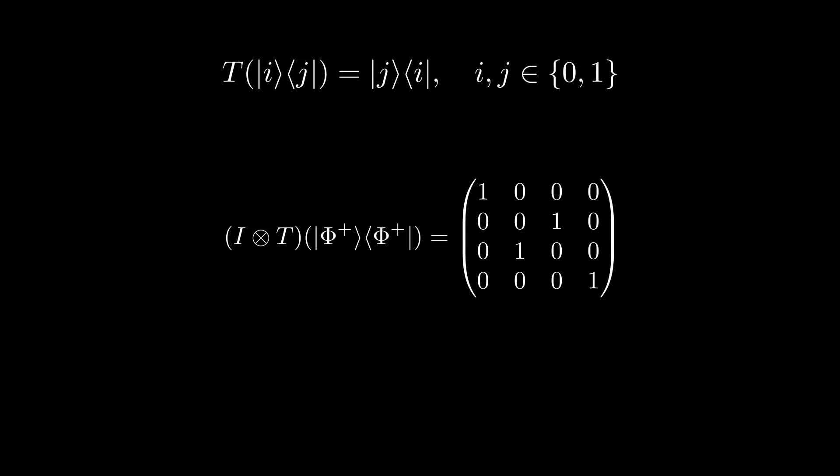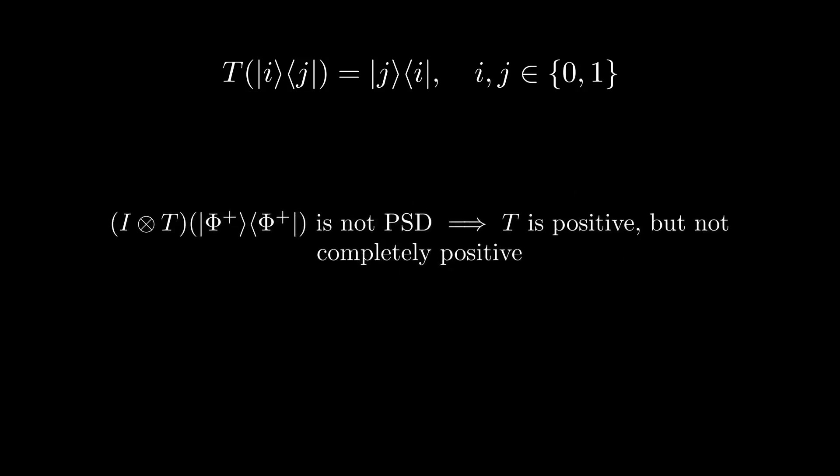If we look at the block matrix in the middle, you can see that we have this Pauli-X matrix, which has eigenvalues plus and minus 1. Since this block is not PSD, we have that the whole matrix cannot be PSD. Consequently, if we extend the Hilbert space, we do not guarantee that positive operators get mapped to positive operators. Consequently, we have that the transpose superoperator is positive, but not completely positive.